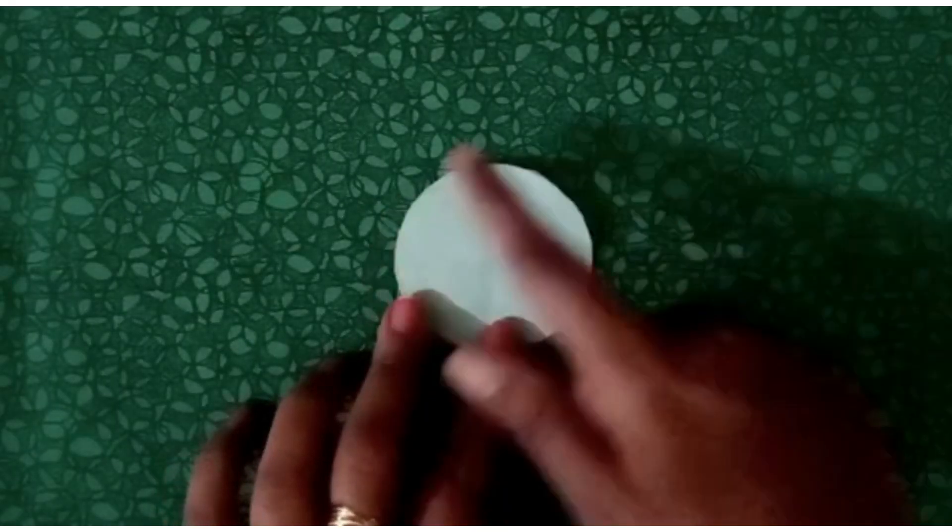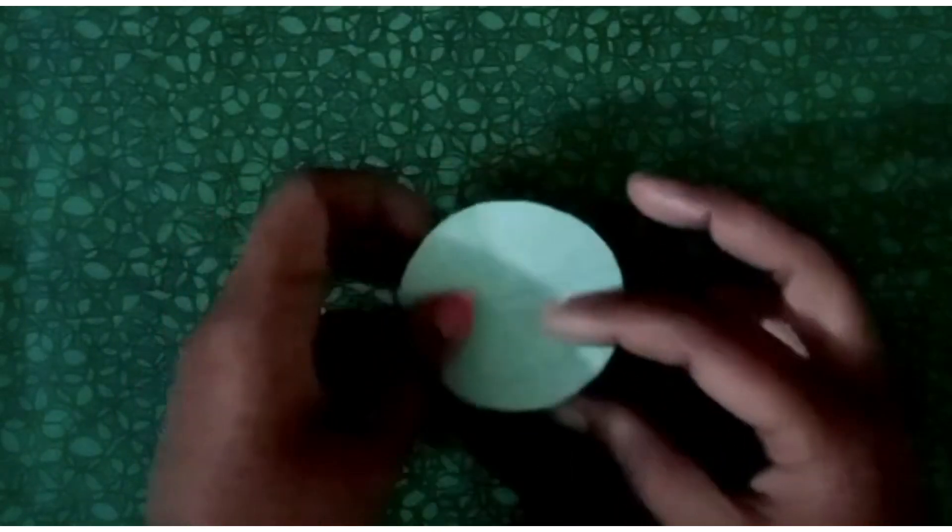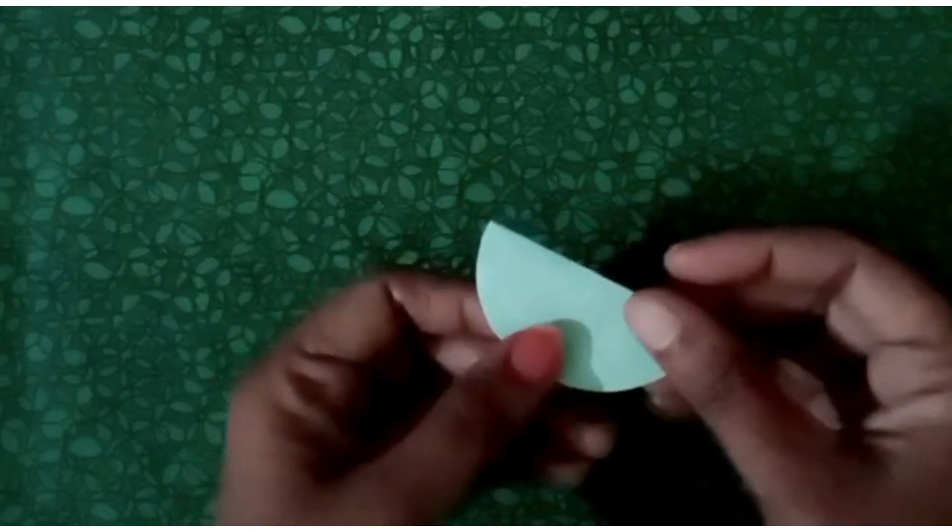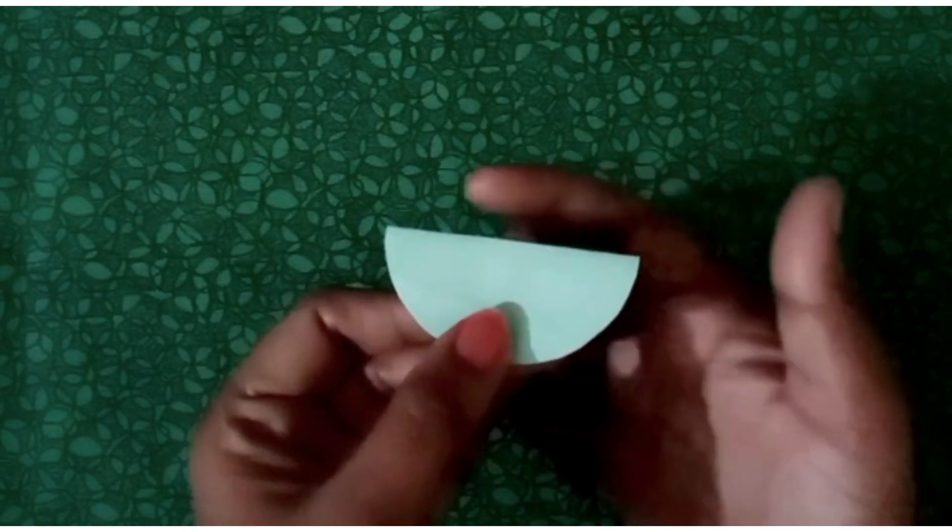Students, I have a circular piece of paper and now I am going to fold it. And after folding, what do we get? We get diameter of the circle.